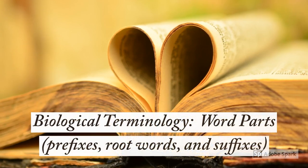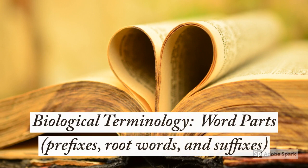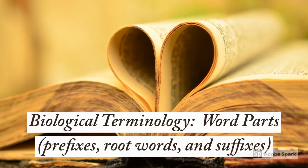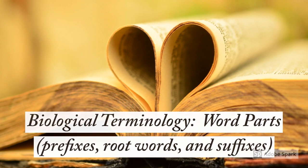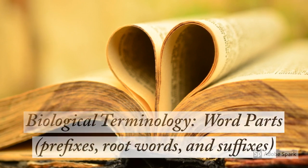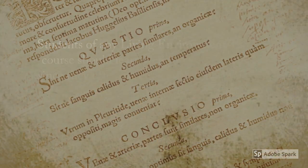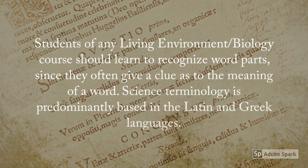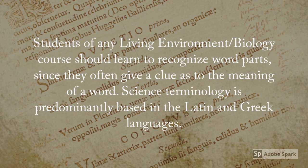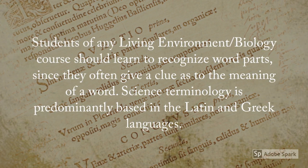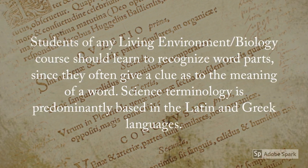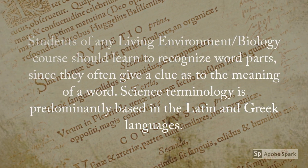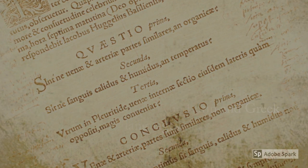Biological terms are sometimes seemingly difficult to understand, but most of the words can be broken down into parts using their root words and by utilizing the prefixes and suffixes. Students of any Living Environment Biology course should learn to recognize word parts since they often give a clue as to the meaning of a word. Science terminology is predominantly based in the Latin and Greek languages.